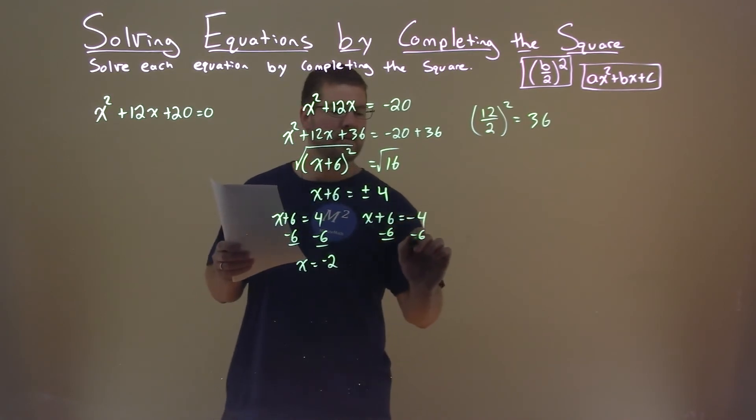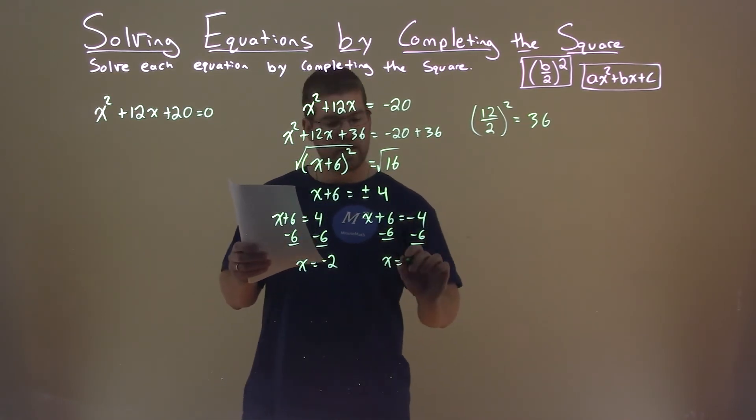Subtract 6 from both sides here, and x equals negative 4 minus 6, which is negative 10.